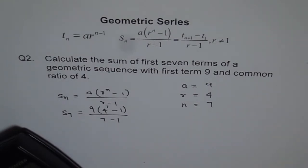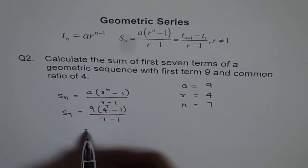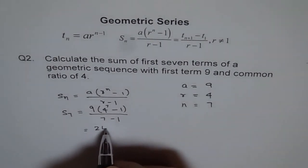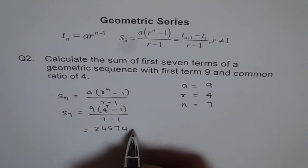We get some value in fractions, convert to decimals, and we get 24574.5.